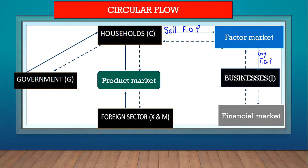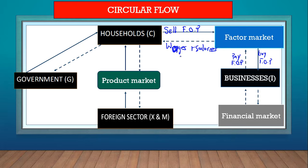The factors of production flow from households to businesses via the factor market. In return, businesses pay for those factors of production — this is the money flow, indicated by the dotted line. That payment flows from businesses to households as wages and salaries.